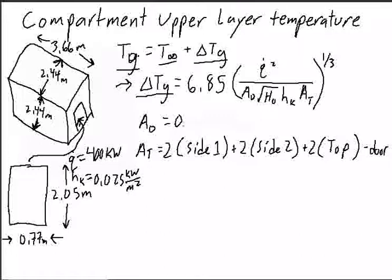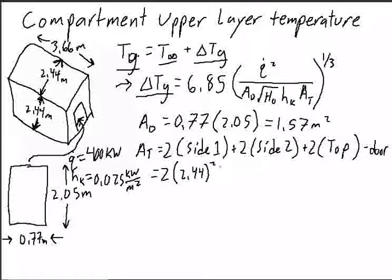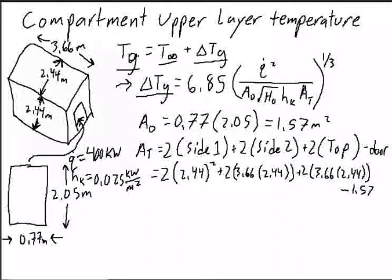So a naught is 0.77 times 2.05, which equals 1.57 meters squared. AT is going to equal 2 times 2.44 squared plus 2 times 3.66 times 2.44 plus 2 times 3.66 times 2.44, minus 1.57 for the area of the door.